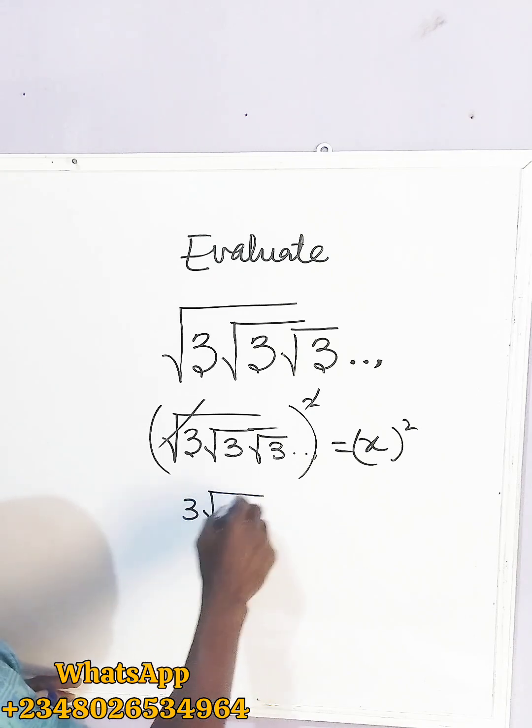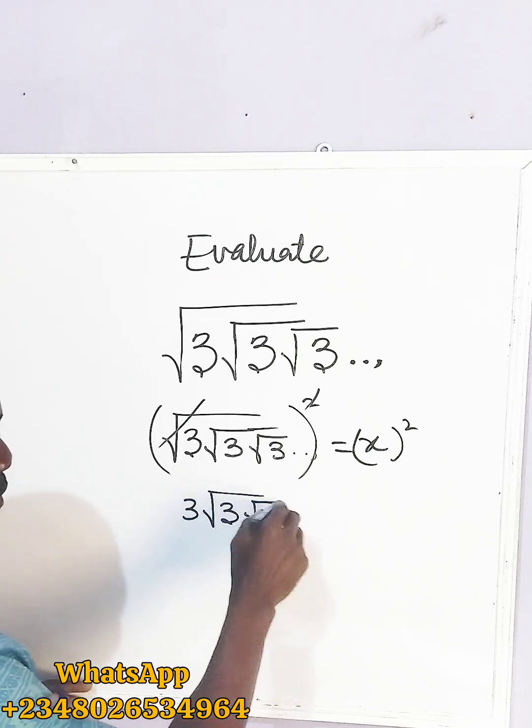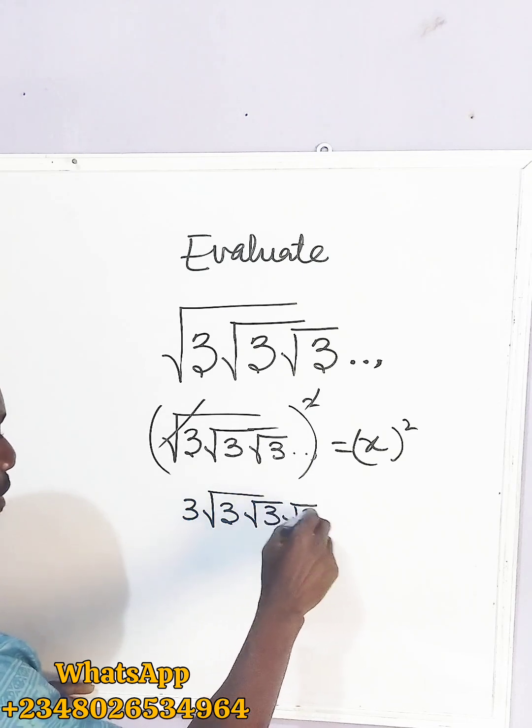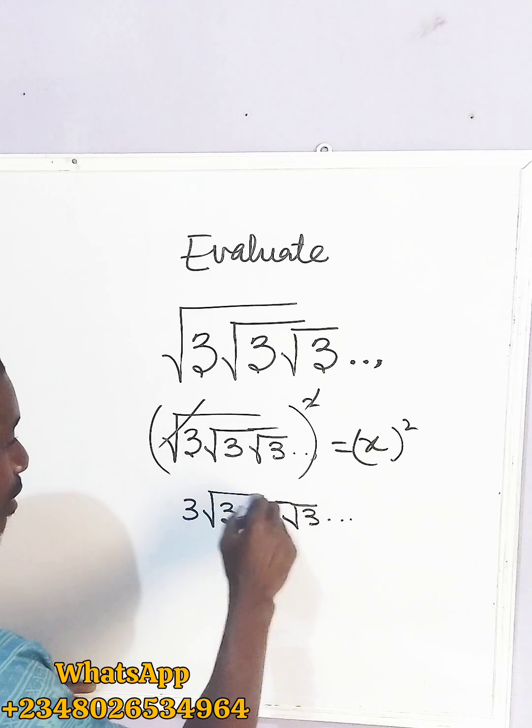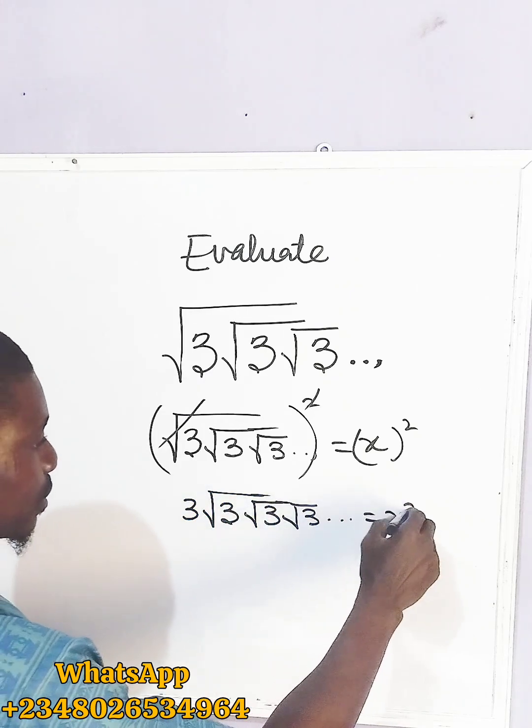The square root of 3, the square root of 3, the square root of 3, and so on like that. Because what? x squared.